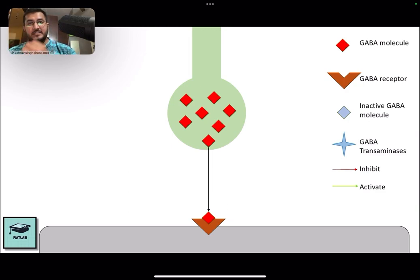Once the GABA molecule has dissociated from the receptor, it can either get reuptaken into the neuron or it can be metabolized by GABA transaminase enzyme.